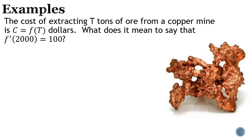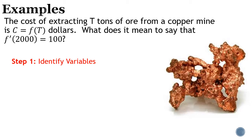Here's your first example to put in your notes — we have three examples. The cost of extracting t tons of ore from a copper mine is C = f(t) dollars, where C represents the cost. What does it mean to say that f′(2000) = 100? Step one: identify what your x and y variables are in this situation.